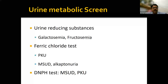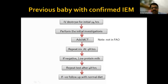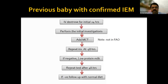When a previous sibling had a confirmed inborn error and a new baby is born — knowing most are autosomal recessive with 25% recurrence risk — if prenatal genetic workup was not done: start IV dextrose for the initial 24 hours and perform baseline investigations (the five basic tests). Add MCT (medium chain triglycerides) — but do not add MCT if the previous baby had a fatty acid oxidation defect. Repeat investigations after 48 hours, then add low-protein milk and repeat again after 48 hours. If negative, follow up with normal feeding.